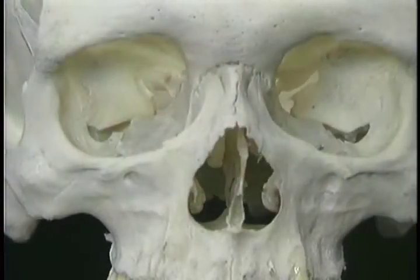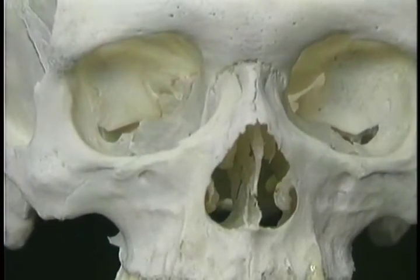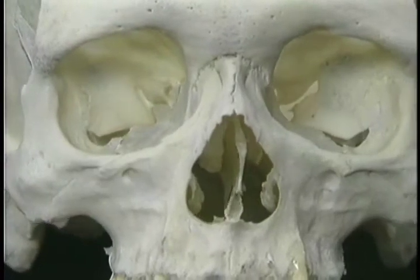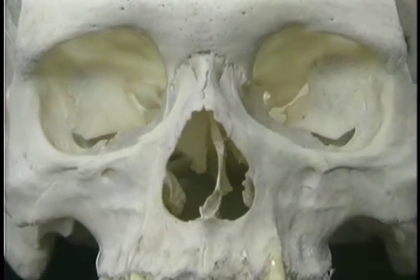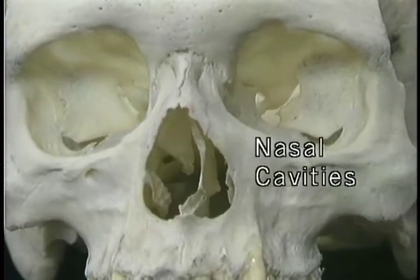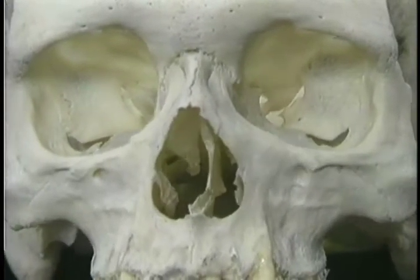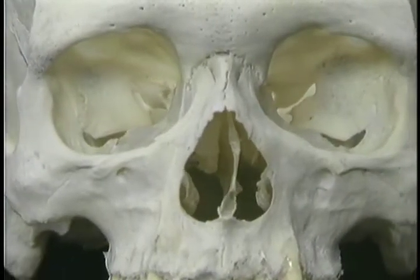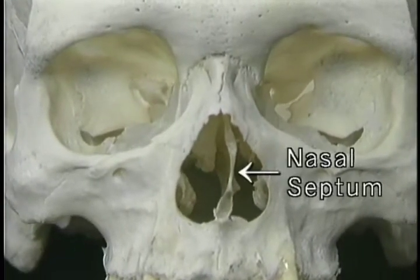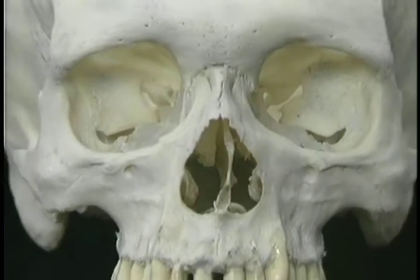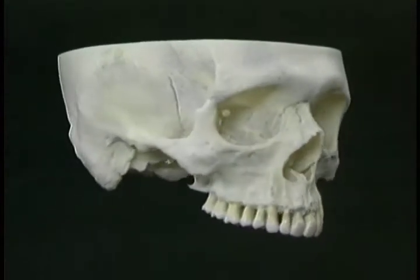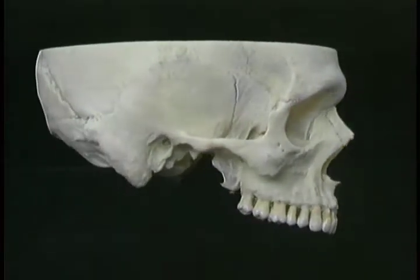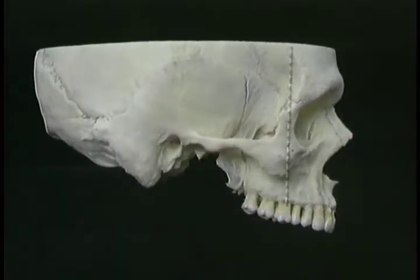The bony opening for the nose is called the piriform aperture. Inside it, there are two nasal cavities — a right and a left — separated in the midline by the nasal septum. To get a better look inside, we'll divide the skull in the frontal plane along this line.